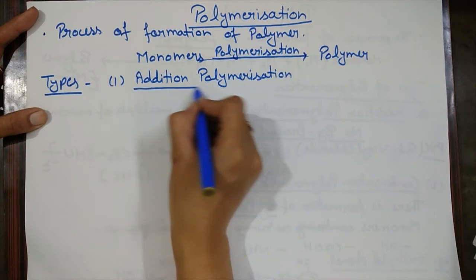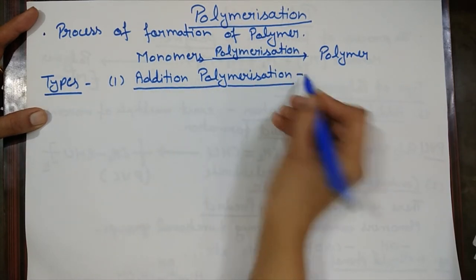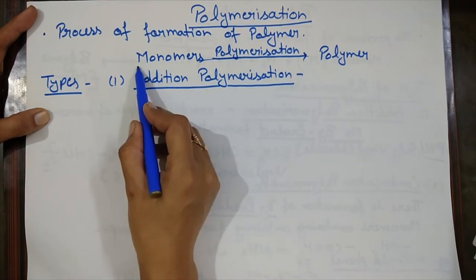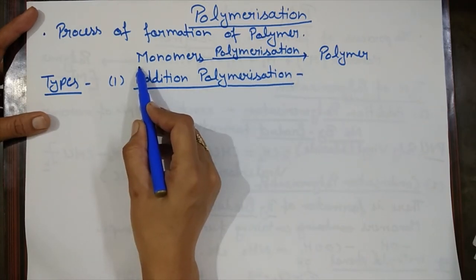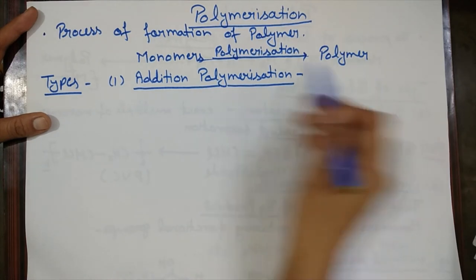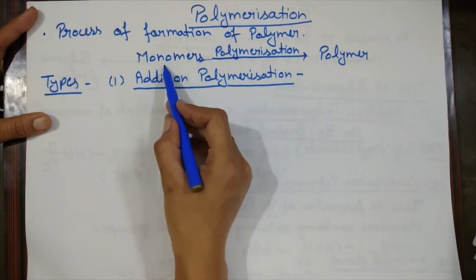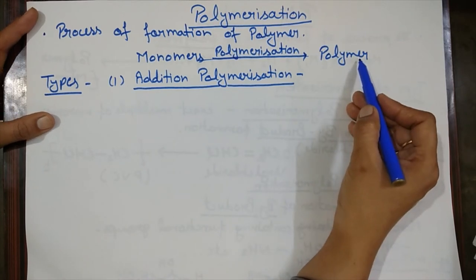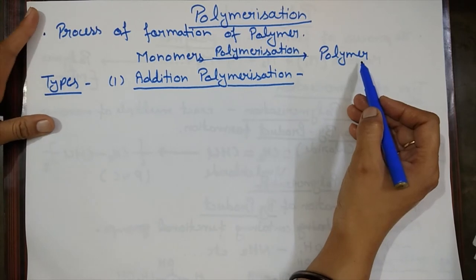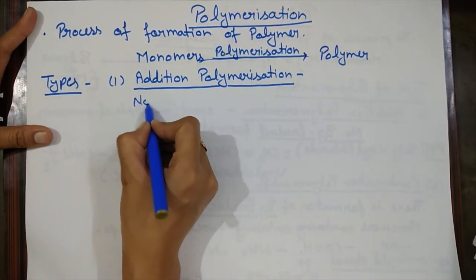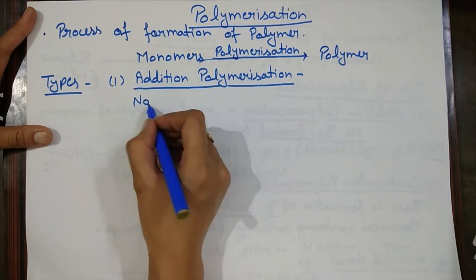What is addition polymerization? It is the process in which the number of monomer units we have gives us an exact multiple in the polymer. That means if we take N number of monomer units, the same number will be found in the attached polymer chain. In this process, there is no byproduct formation.